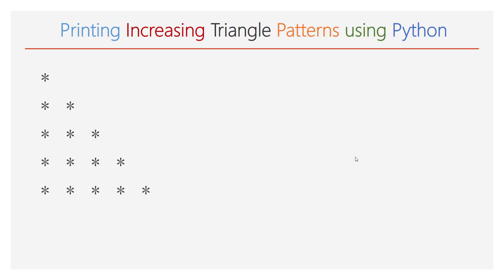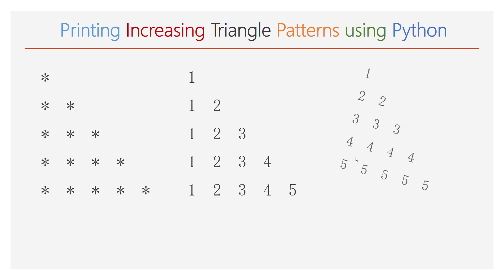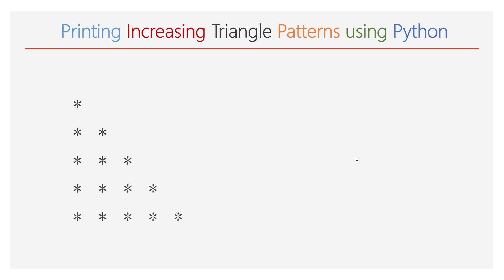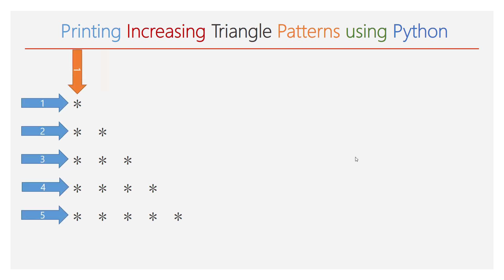Hi viewers, in this video we will discuss how to print an increasing triangle pattern using Python coding. Let us consider an increasing triangle pattern that consists only of stars. Count the number of rows and the number of columns — the given pattern is 5 x 5.